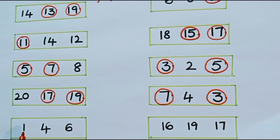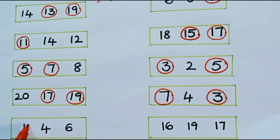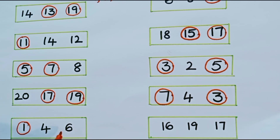What are the numbers in the next row? 1, 4, 6. Is 1 odd or even? 1 is an odd number, and 4 and 6 are even numbers.